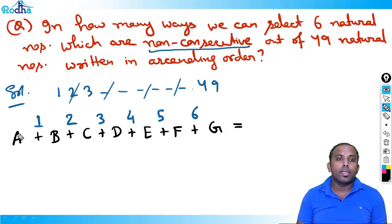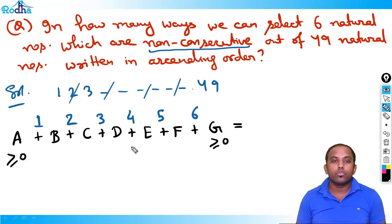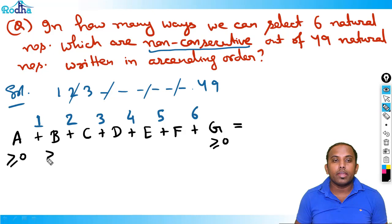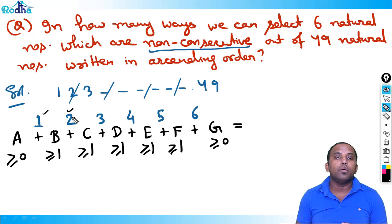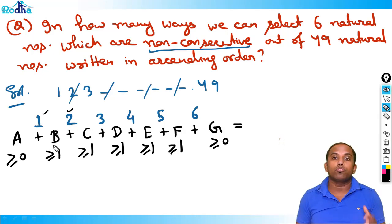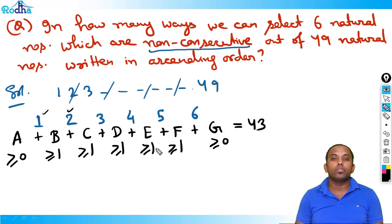The constraints: A and G can be zero, while B, C, D, E, F must each be at least 1 because the numbers are non-consecutive. The sum of all variables should be 43, because out of 49 numbers I've already selected 6, leaving 43 to be distributed.